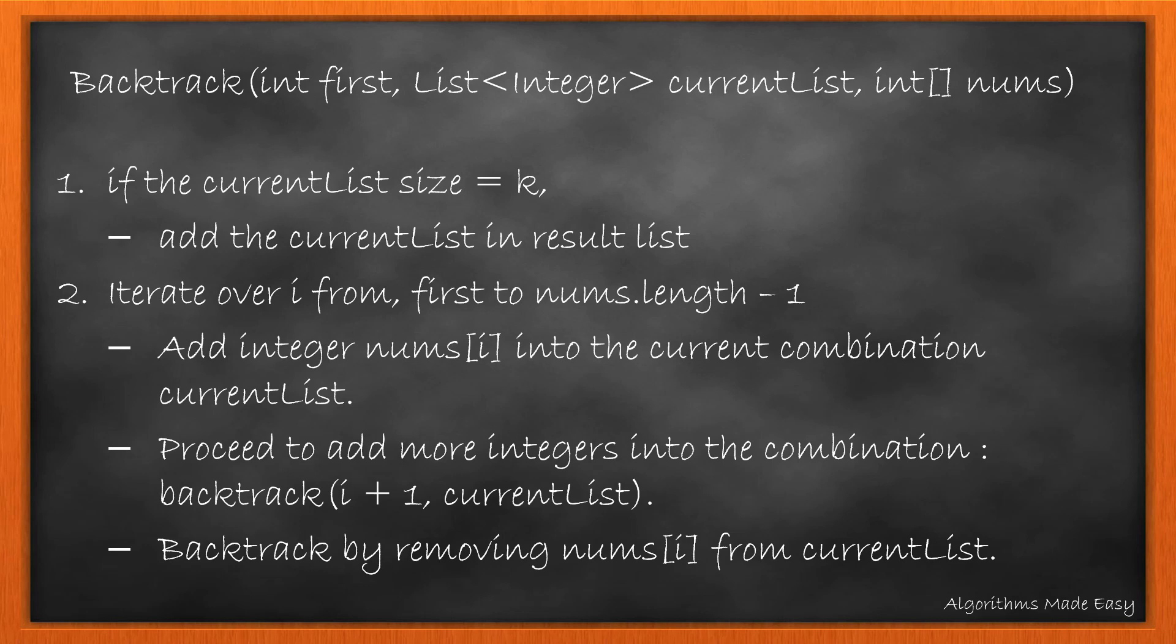So we add it in the result list. Otherwise, we iterate through nums from first to end of nums and keep adding the number in the current list. We recursively call the backtrack method to add more integers to the combination. At the end, we backtrack by removing nums[i] from the current list.